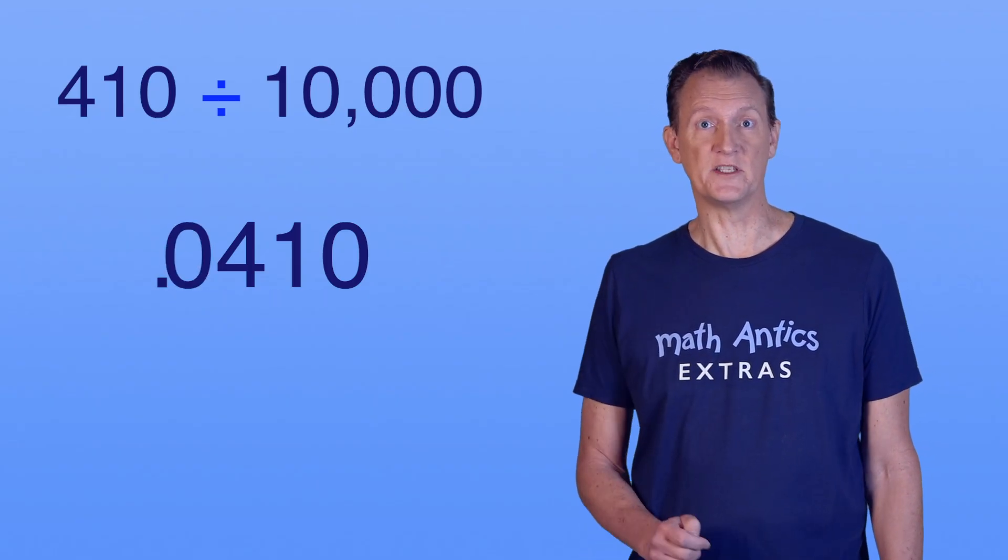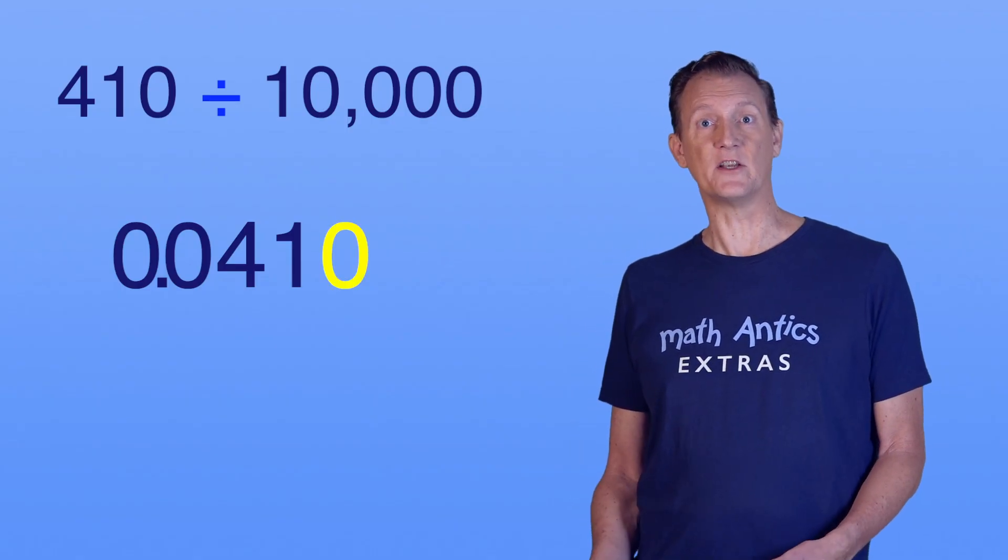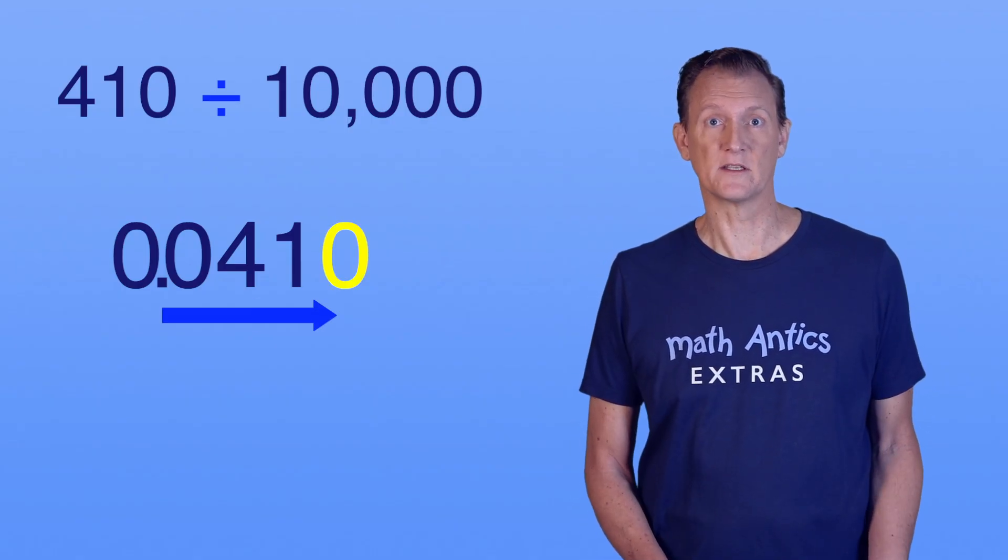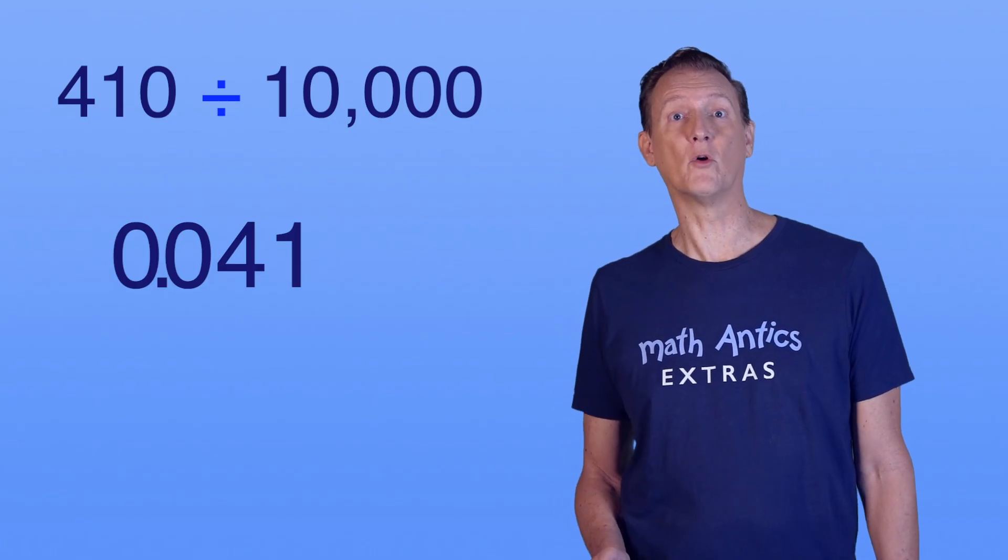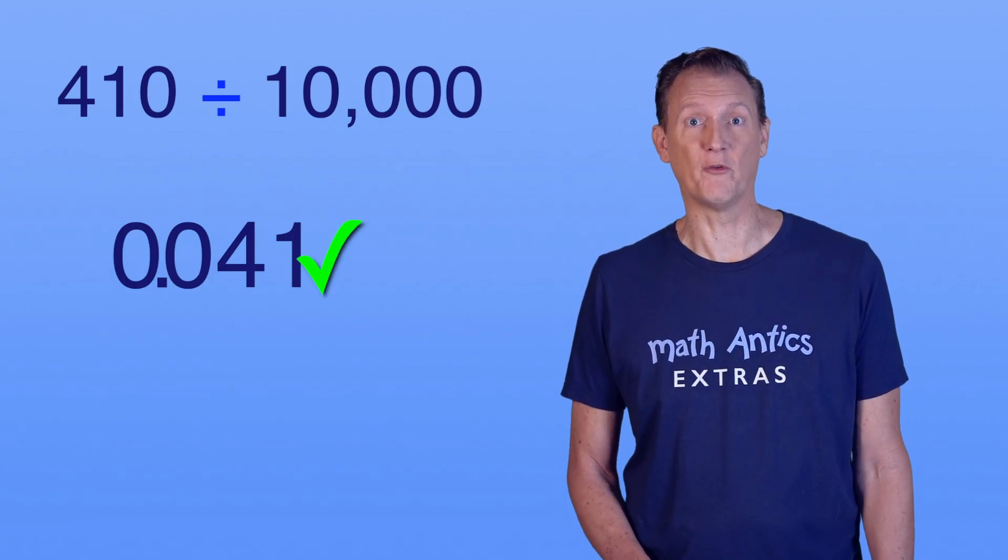It's also a good idea to put a zero in the ones place to make it easier to read. We can also trim that ending zero since it's to the right of the ones place. There, now we have 0.041, and 410 divided by 10,000 is 0.041.